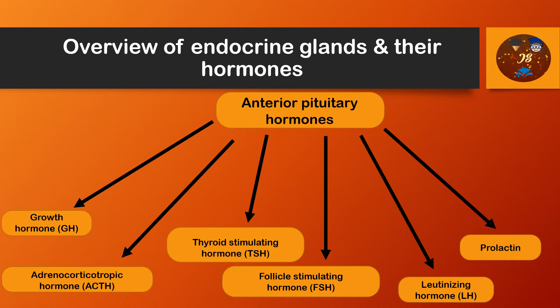The second hormone is adrenocorticotrophic hormone, or ACTH. It causes the adrenal cortex to secrete the adrenocortical hormones, so it acts on the adrenal cortex and is very important.